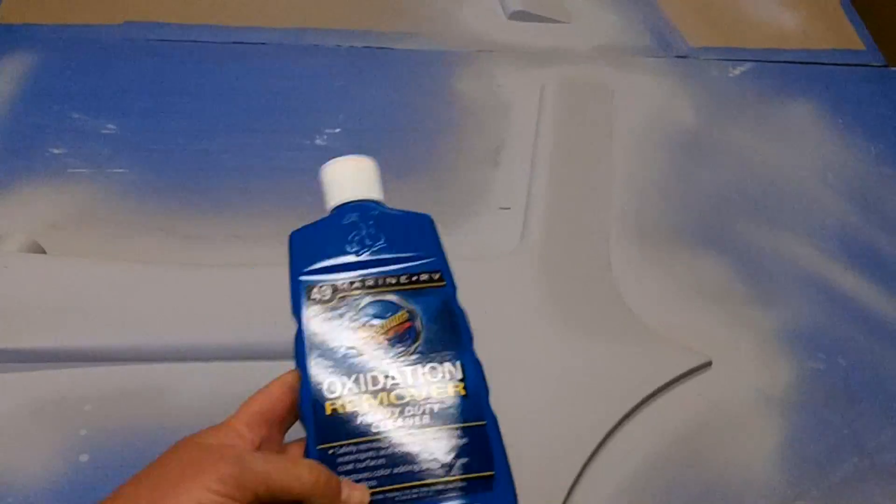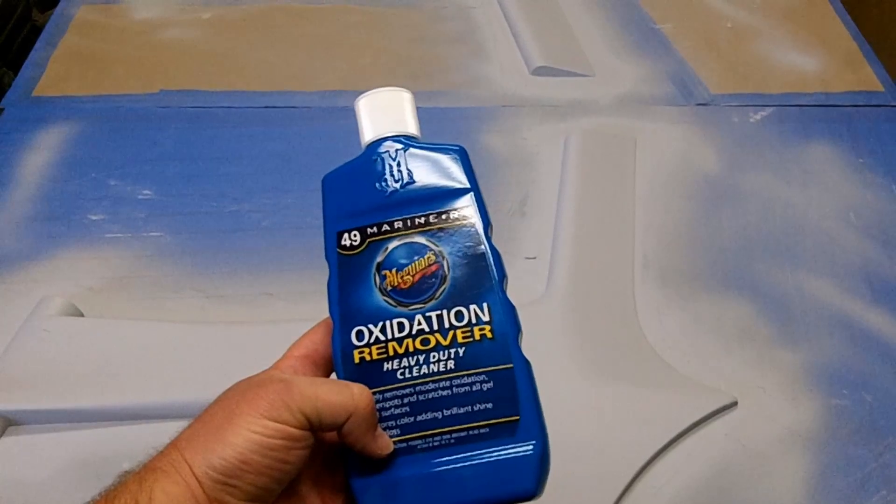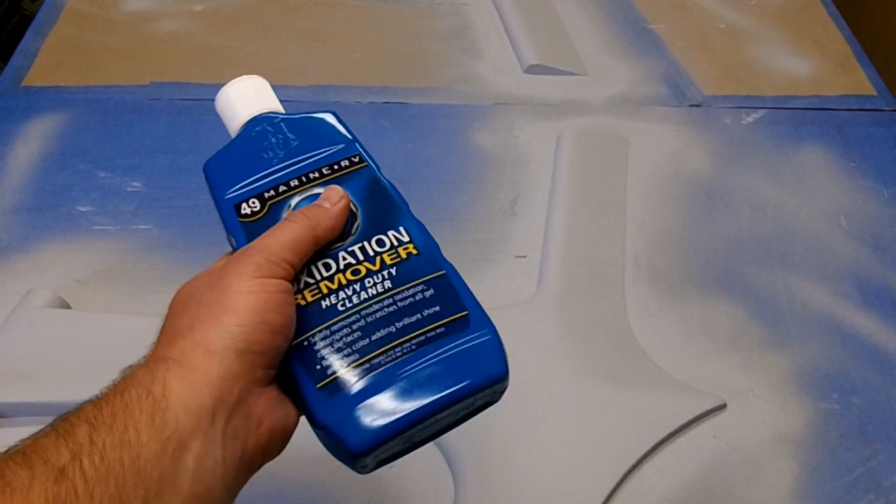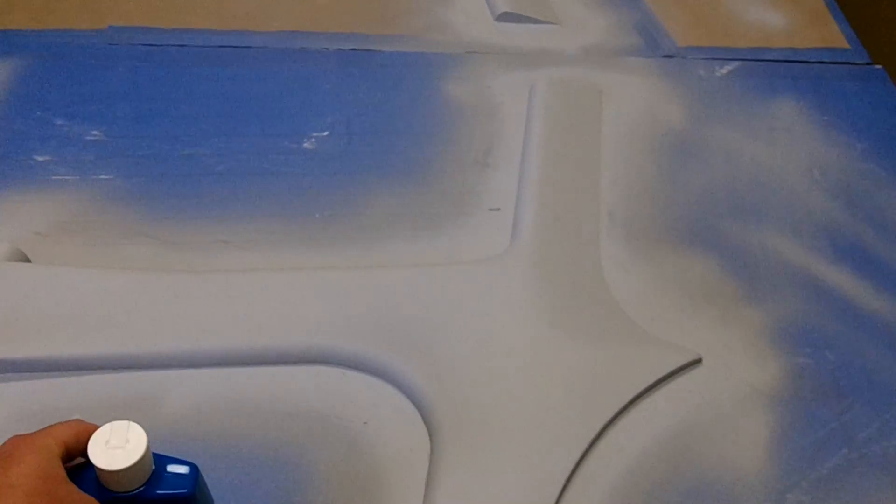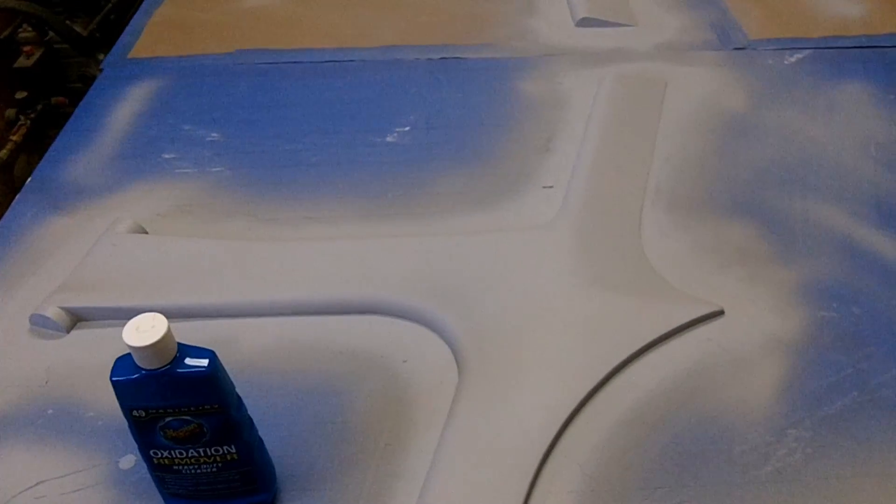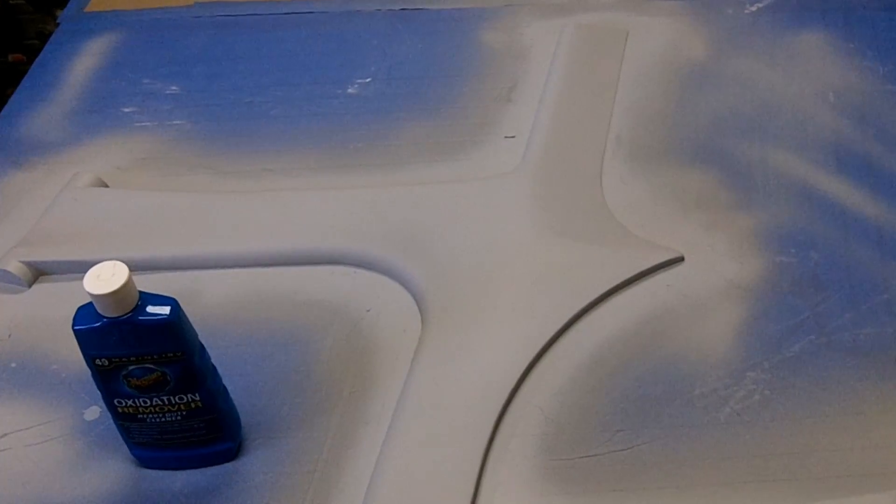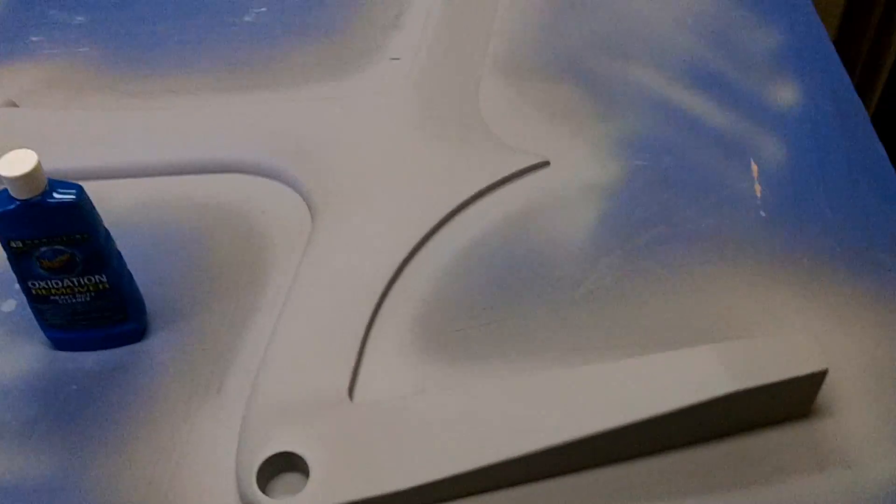And then I'll use this. This is Meguiar's oxidation remover. It's specifically made for gel coat on boats. I really like using this stuff because it cuts it down pretty fast and makes a nice polish, makes it really nice and shiny. And then we'll go ahead and get ready to prep for making the female molds off of these.